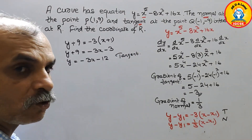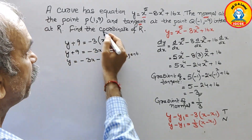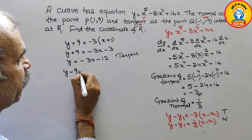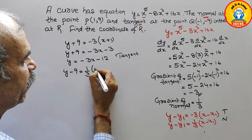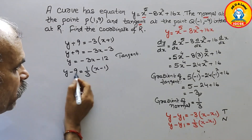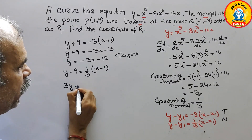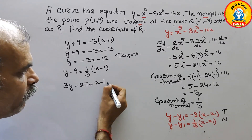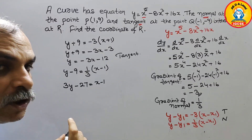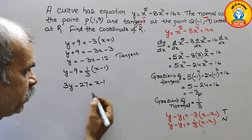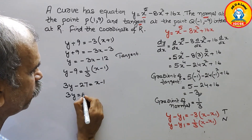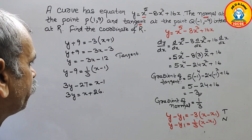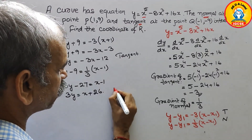Now for the equation of the normal at P(1, 9): y - 9 = (1/3)(x - 1). Cross-multiplying: 3y - 27 = x - 1, which rearranges to 3y = x + 26, or equivalently 3y - 1 = x + 26. This is the equation of the normal.